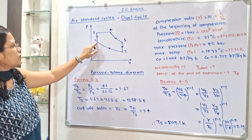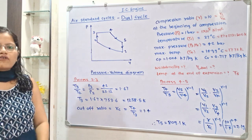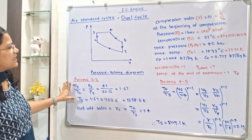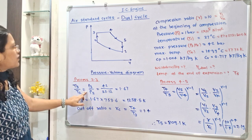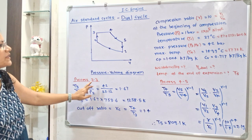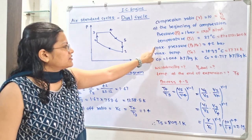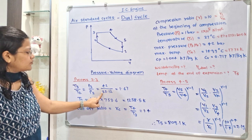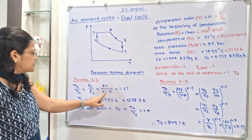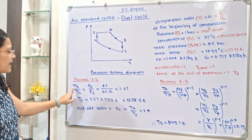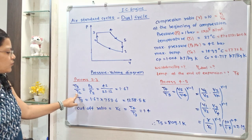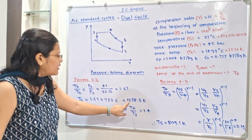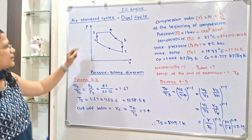For process 2 to 3, heat addition occurs at constant volume. The relation is T3/T2 = P3/P2. We know P3 = 42 bar (maximum pressure) and P2 = 25.12 bar. So P3/P2 = 42/25.12 = 1.67. Therefore T3 = 1.67 × T2 = 1.67 × 753.56 = 1258.5 K. This is the temperature at point 3.